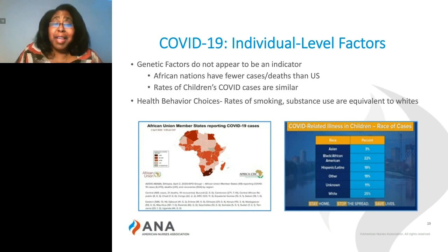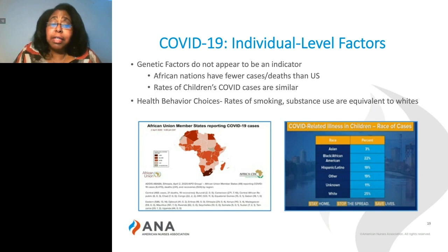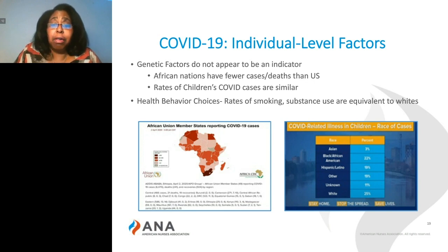We also recognize that behavioral health choices may not be a factor, because the rates of smoking, substance use, and alcohol use are approximately equivalent to whites. Approximately 11 to 15% of whites, Latinos, and African Americans smoke cigarettes; about 23 to 27% use alcohol; and 10 to 15% may use substances or drugs. Although policing may lead to increased rates of arrest for some communities, the actual use across those communities is actually even.